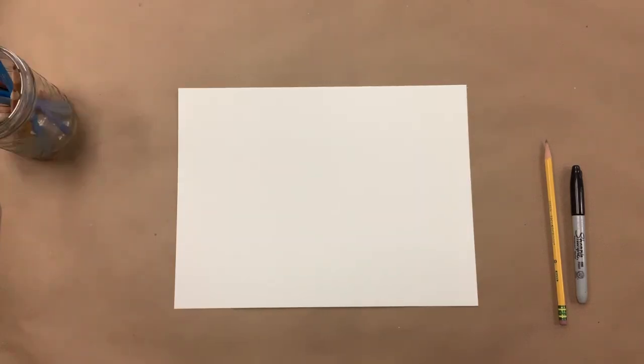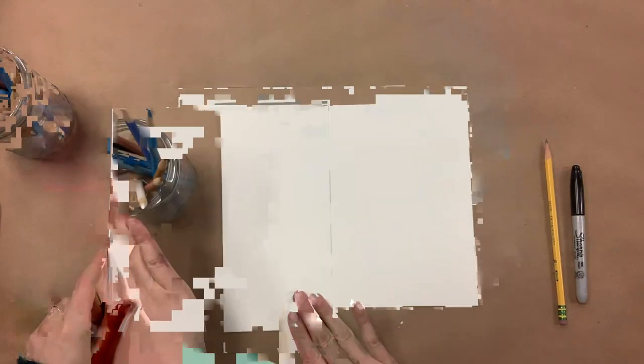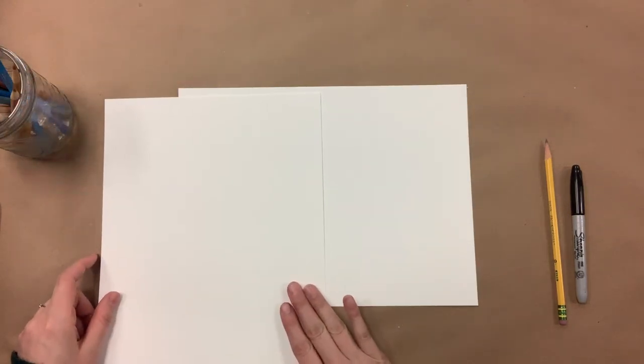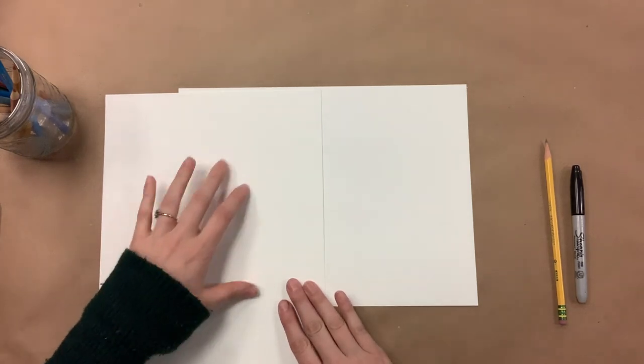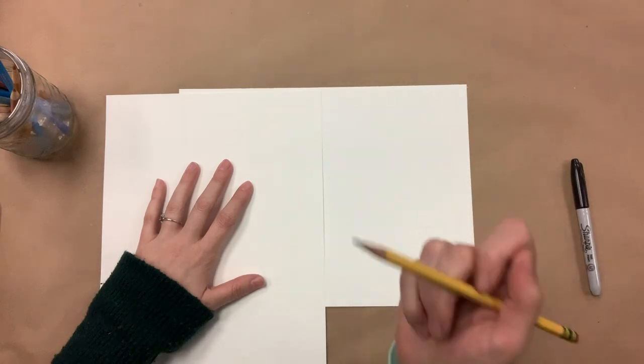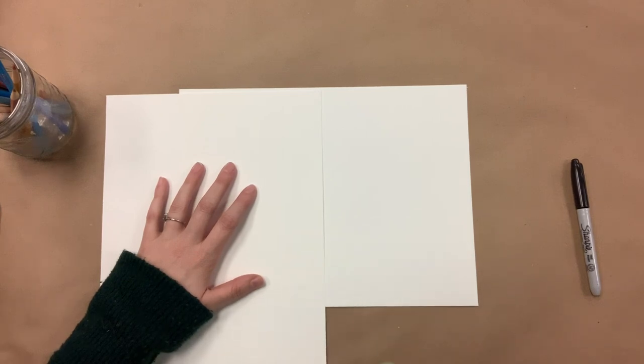The very first thing we're going to do is draw some lines to find the center of our paper. You can either eyeball this or you can take a ruler, or I'm going to grab another piece of paper just to help guide me. So you're going to take your pencil, you're going to draw very lightly because this is going to be a line that you're going to want to erase later.